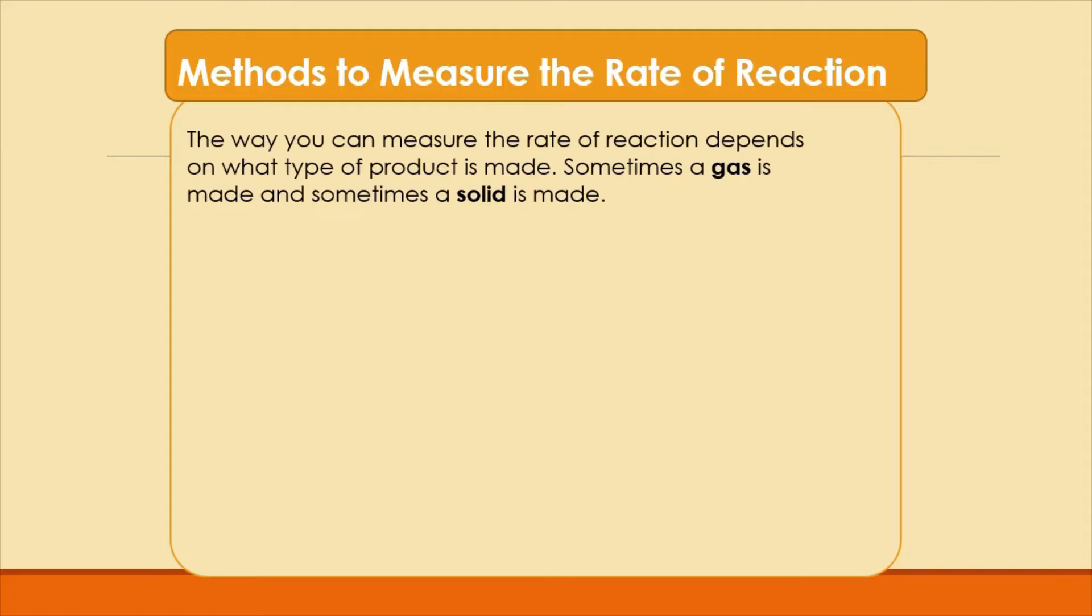So how do we know what method to choose when measuring the rate of reaction? The way you can measure the rate of reaction depends on what type of product is made. Sometimes a gas is made and sometimes a solid is made. To see what type of product is made, look at the state symbols in an equation. In particular, look at the state symbols on the right hand side of the arrow where the products are found.